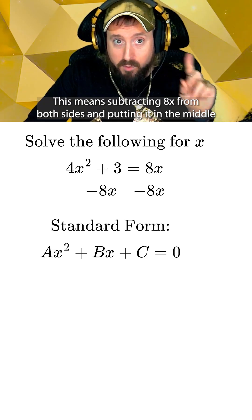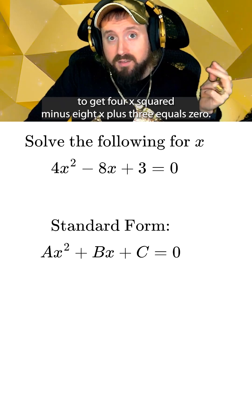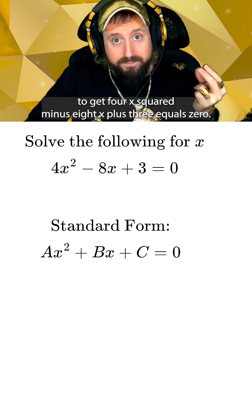This means subtracting 8x from both sides and putting it in the middle to get 4x squared minus 8x plus 3 equals 0.